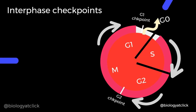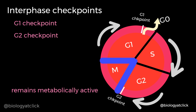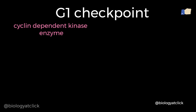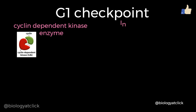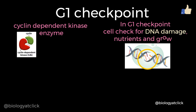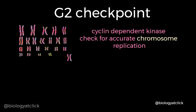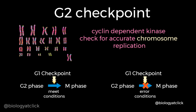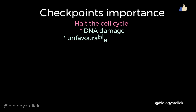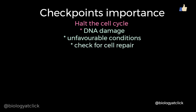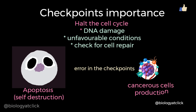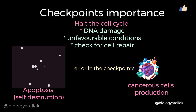Two important checkpoints during interphase are the G1 checkpoint and G2 checkpoint. At the G1 checkpoint, cyclin-dependent kinases play a vital role, and the cell also checks for DNA damage and other favorable conditions. If the cell meets all requirements, it will enter S phase. At the G2 checkpoint, the cell ensures that all chromosomes have been accurately replicated; if so, cyclin-dependent kinases signal the beginning of mitotic cell division. Checkpoints are important because they hold the cell cycle from proceeding in case of any damage or unfavorable conditions. If the damage cannot be repaired, the cell undergoes apoptosis. If the checkpoint mechanism fails, the cell becomes cancerous.